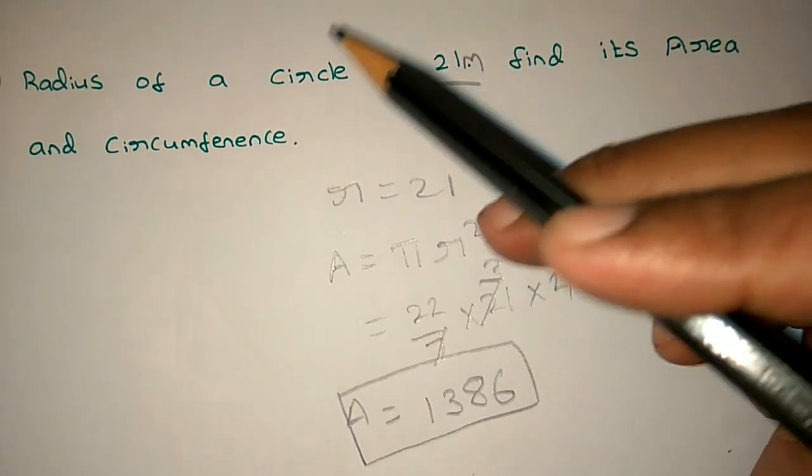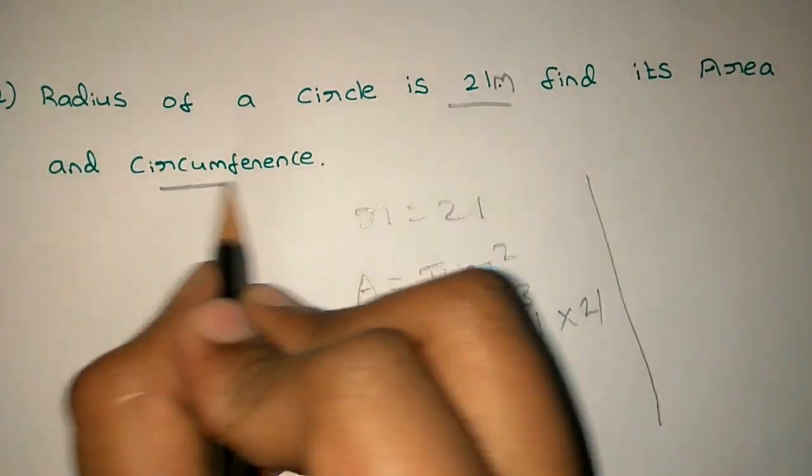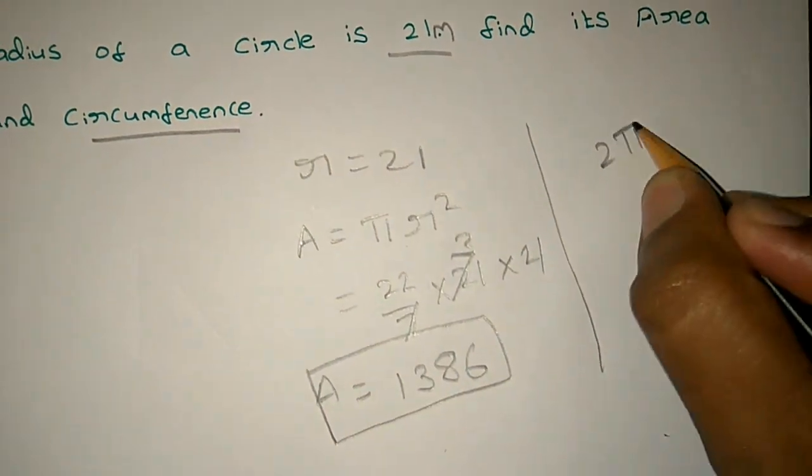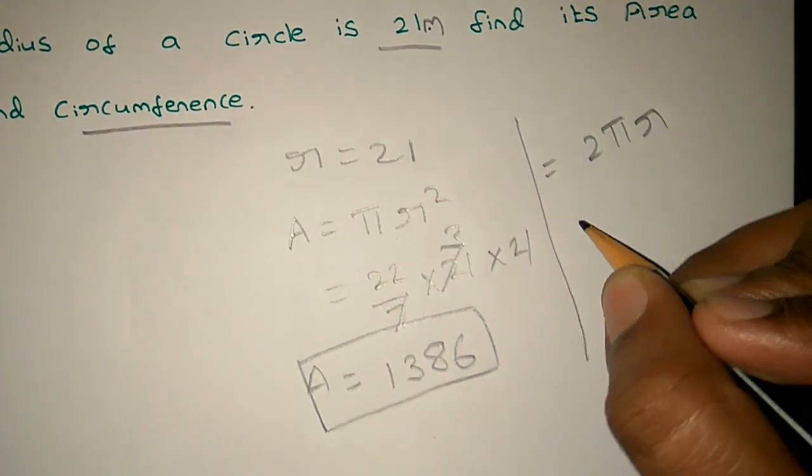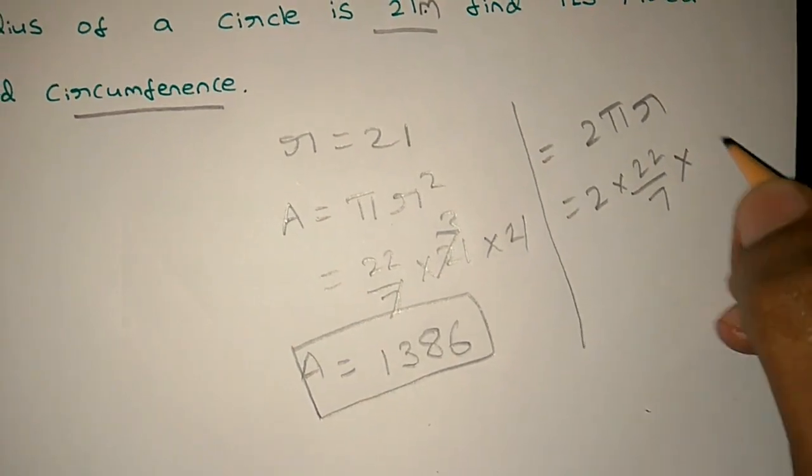And now we will solve the circumference. Circumference equals 2 pi R. We substitute: 2 times 22 by 7 into 21.